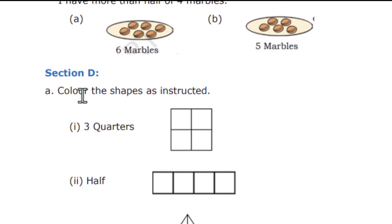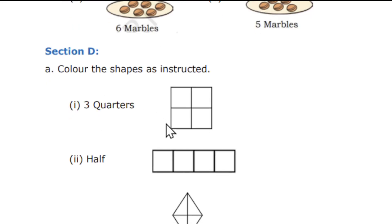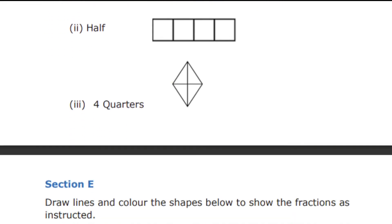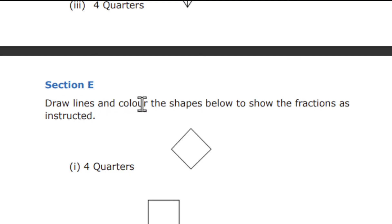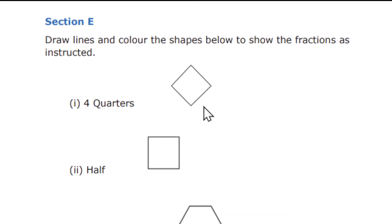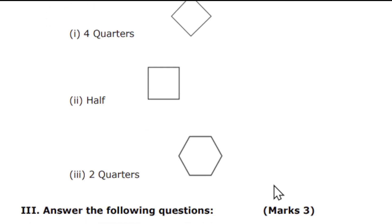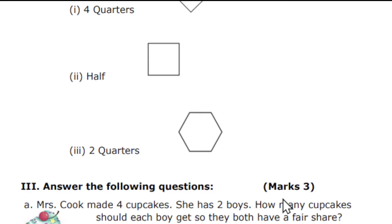Session D: color the shapes as instructed — 3 quarters, halves, and 4 quarters. Session E: draw lines and color the shapes below to show the fraction as instructed. I have given with 4 quarters, so you have to draw the line to make it 4 quarters and also color it. Next you have to do for half, and then for 2 quarters.